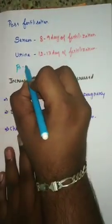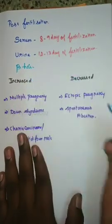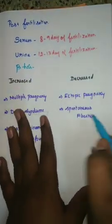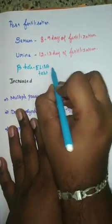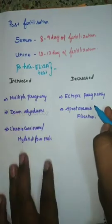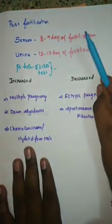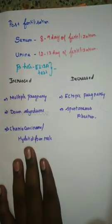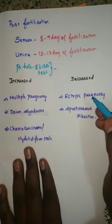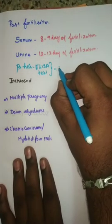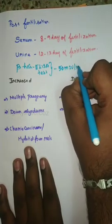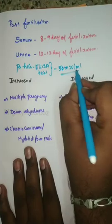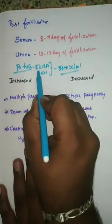For detection of beta HCG, an ELISA test is used. The ELISA test can detect beta HCG in serum from day 8 to 9 and in urine from day 12 to 13 post-fertilization. A minimum level of 50 milli-international units per ml is required for detection by beta HCG ELISA rapid tests.